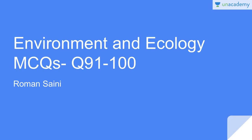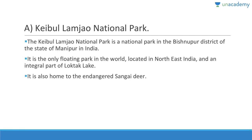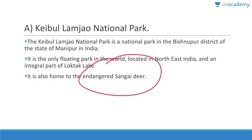Questions 91 to 100. Question 91: The only floating national park in the world is Keibul Lamjao National Park. It is an integral part of Loktak Lake, located in the Bishnupur district of Manipur in northeast India. It is a refuge for the endangered Sangai deer.